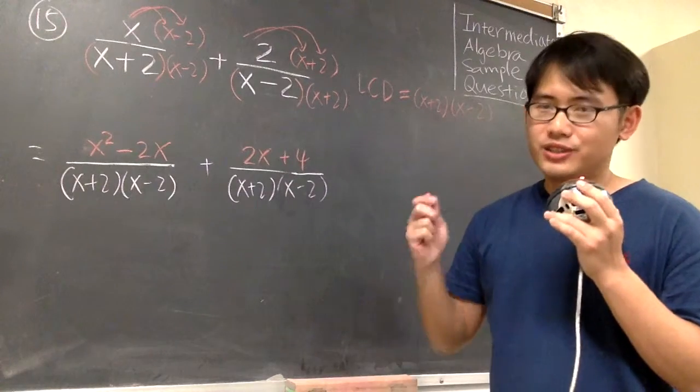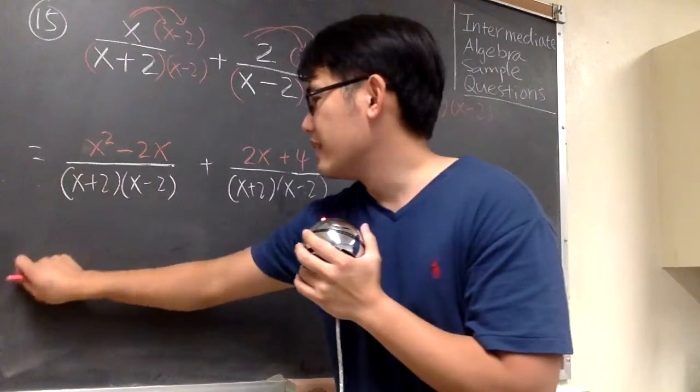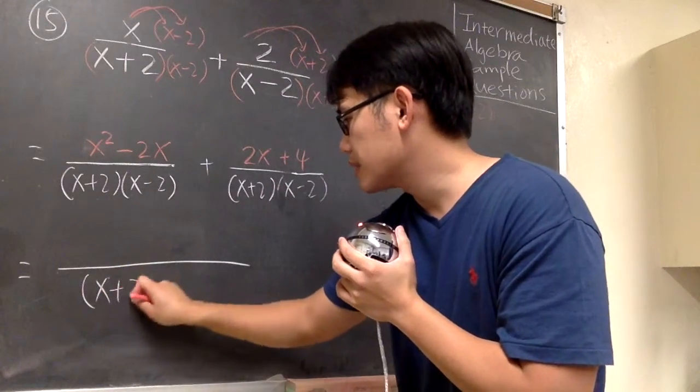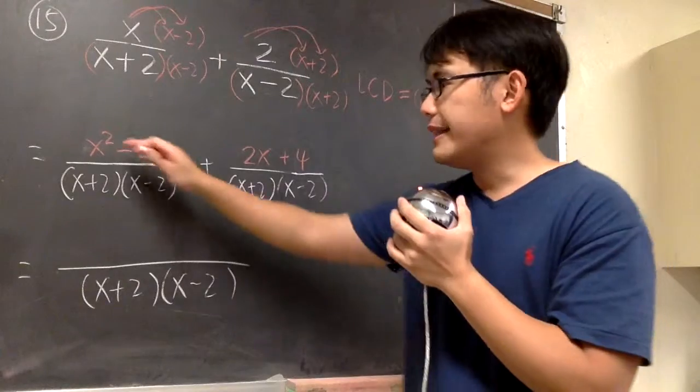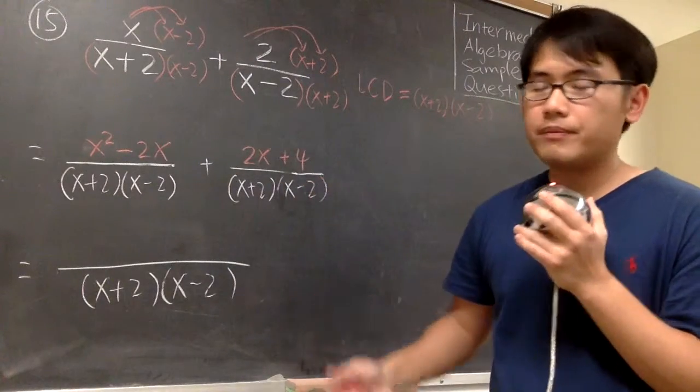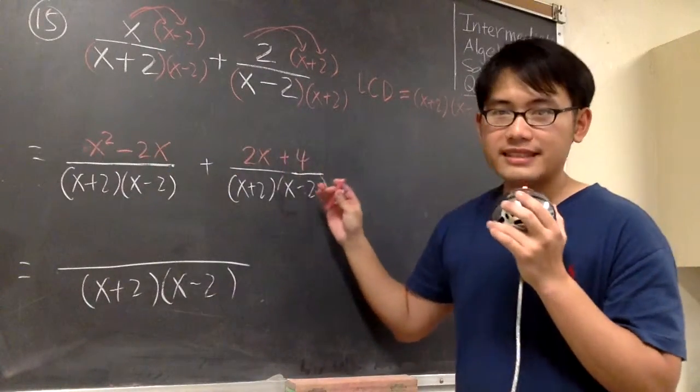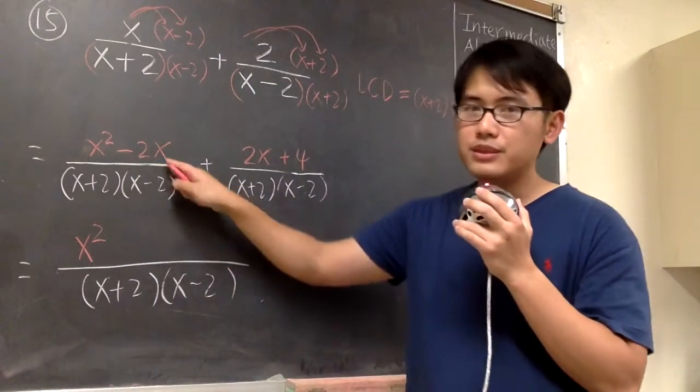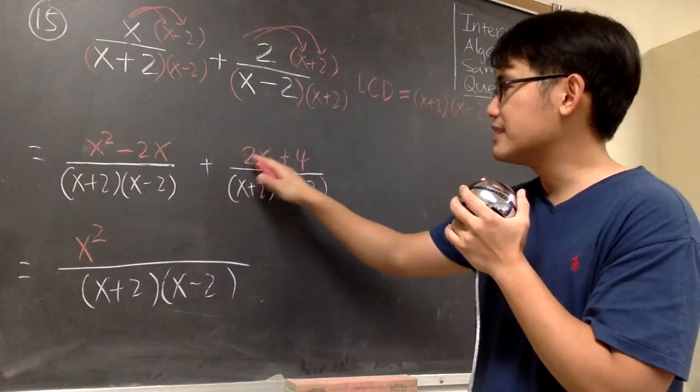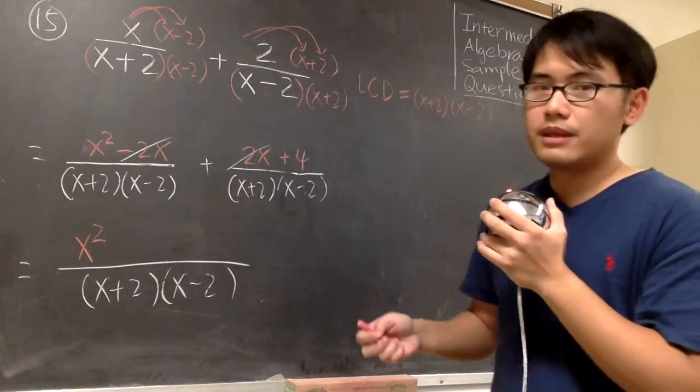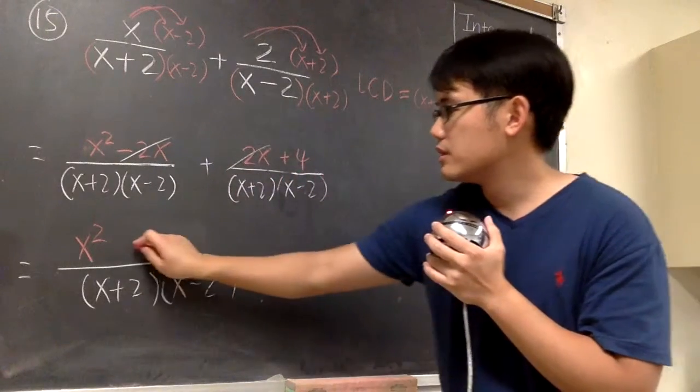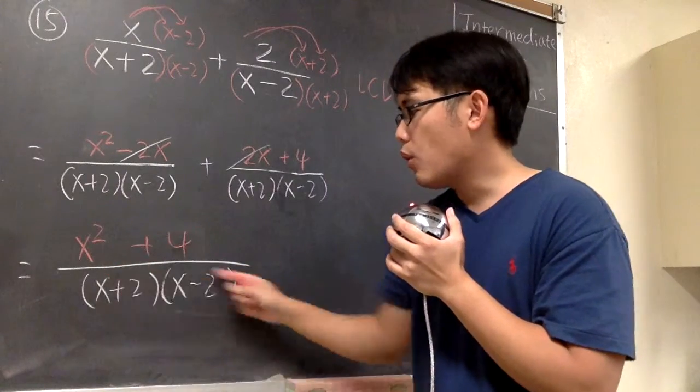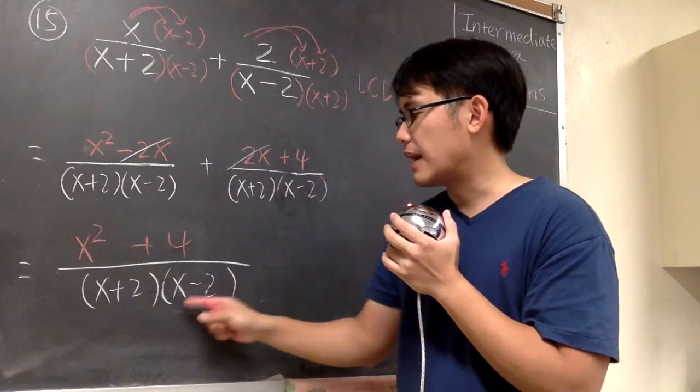So now we are ready to add just the top though. The denominator will stay the same. We'll just put down x plus 2 times x minus 2, and then we'll combine the terms on the top. Here we have x squared, but there is nothing else that has x squared. So we just put down x squared. But then for the minus 2x, here we have the 2x. They cancel out. At the end, we have the 4, so we just put down plus 4. That's pretty much it. x squared plus 4 over x plus 2 times x minus 2.